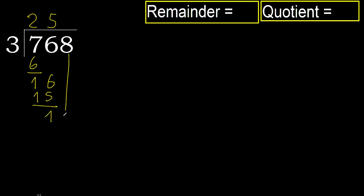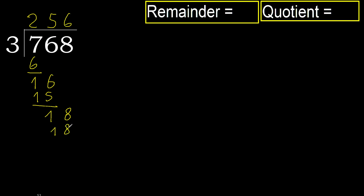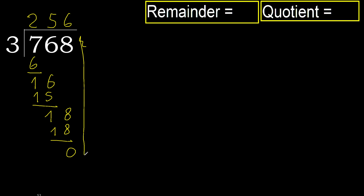Next, 18. 3 multiplied by 6 gives 18, which is not greater. Subtract. Next, there is no remainder. Therefore, finish.